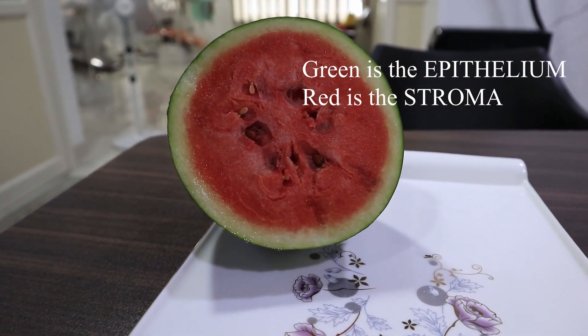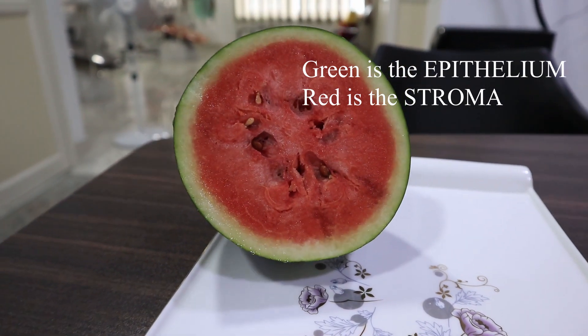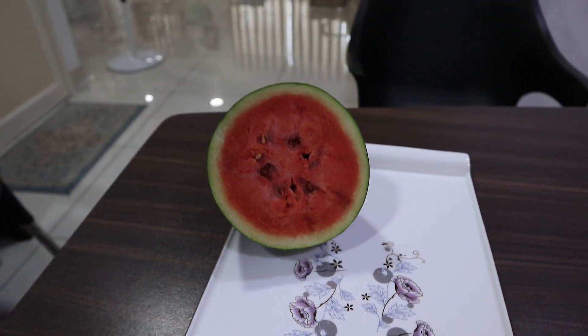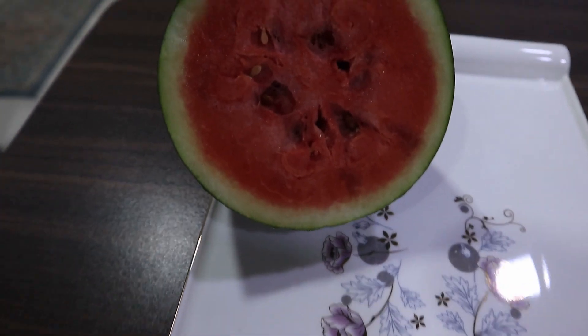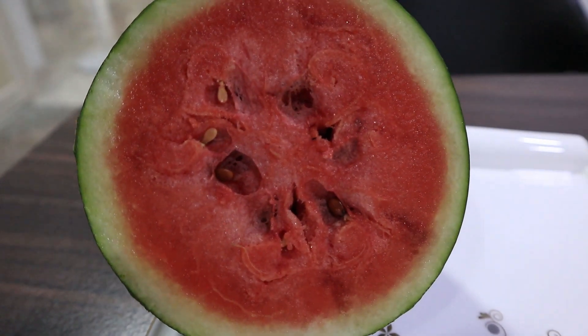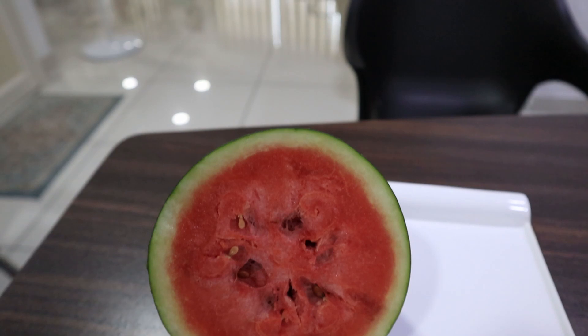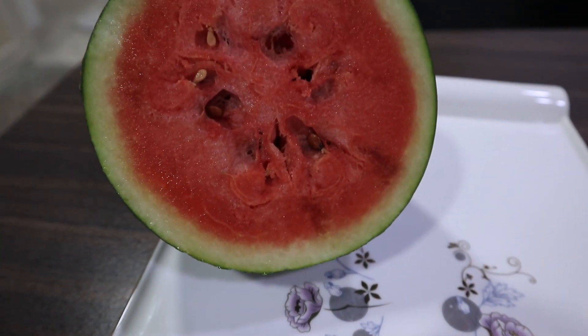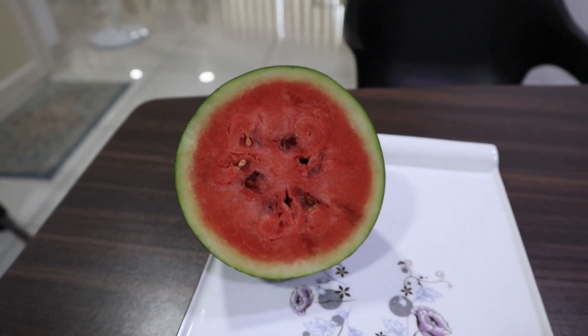Inside, there is the epithelial component and the stromal or connective tissue component of the lesion. When we talk about the epithelial component, it is the part analogous to the skin or the mucosa. When we talk about the stroma, we are talking about what the lesion actually is. Sometimes the lesion is an epithelial lesion where the epithelium is studied in more detail. In swellings, we focus mainly on the connective tissue. In some lesions, both have equal significance.